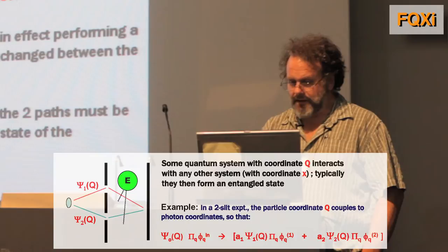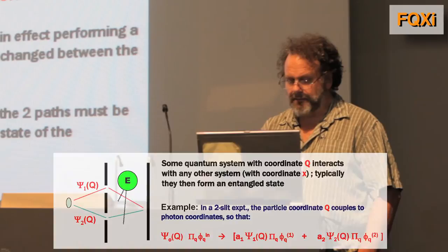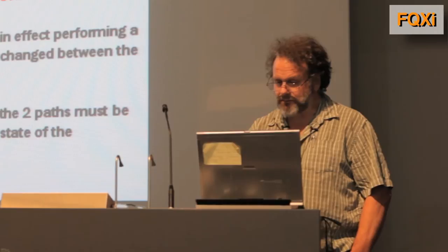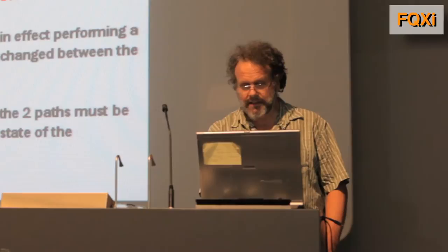I'm going to take the bath wave function to be a product over a large number of states, which are called phi_q here — these are the initial states. Now the point is that these things couple to the particle, and so when we go out, we get a superposition of both the particle states and the bath states which are coupled to it. This is just ordinary quantum mechanics.